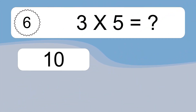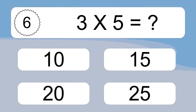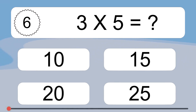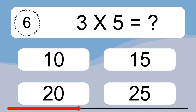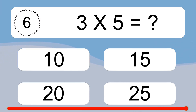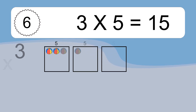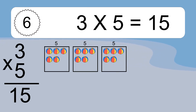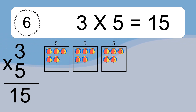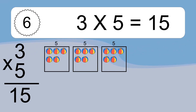3 times 5 equals what? 3 times 5 equals 15. We have 3 boxes, and each box has 5 colorful balls inside. If you count all the balls in all the boxes together, you will have 3 times 5 balls. This equals 15 balls.